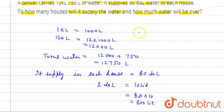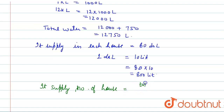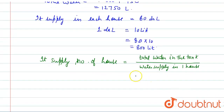Now we find how many houses the tanker will supply. The number of houses equals total water in the tank divided by water supply per house, which is 12,750 ÷ 800.